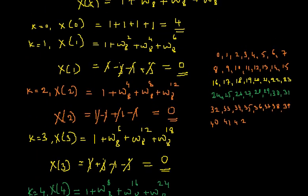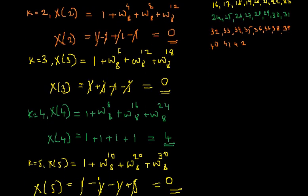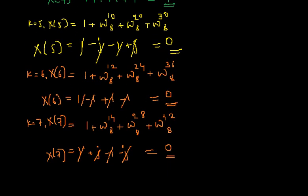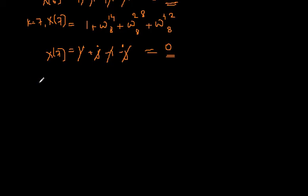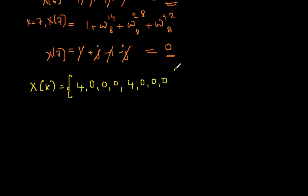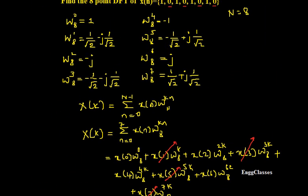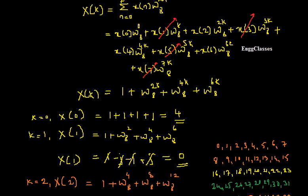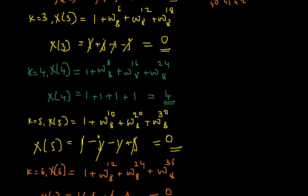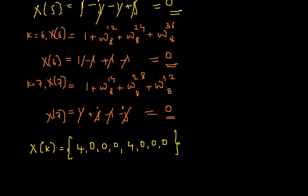So X(k) is: 4, 0, 0, 0, 4, 0, 0, 0. This is the final value for X(k), and this is how I find the 8-point DFT of this sequence. I have solved everything step by step. If there are any doubts, please let me know in the comment section. Don't forget to subscribe to the channel NG Classes for more interesting videos on digital signal processing. Thank you everyone for watching.